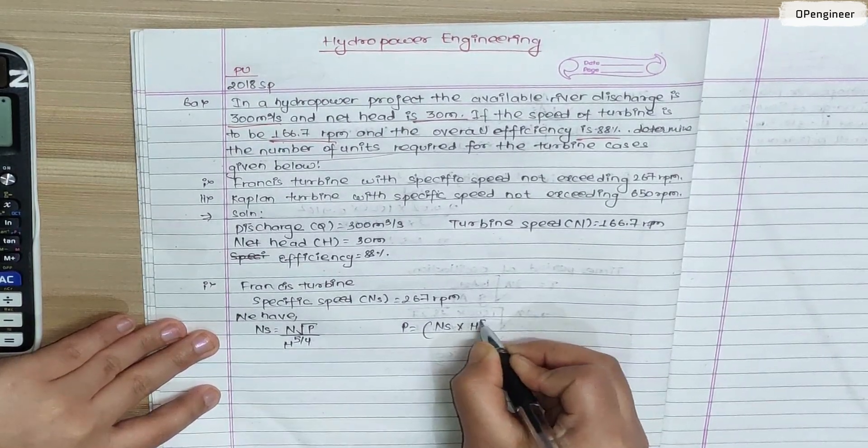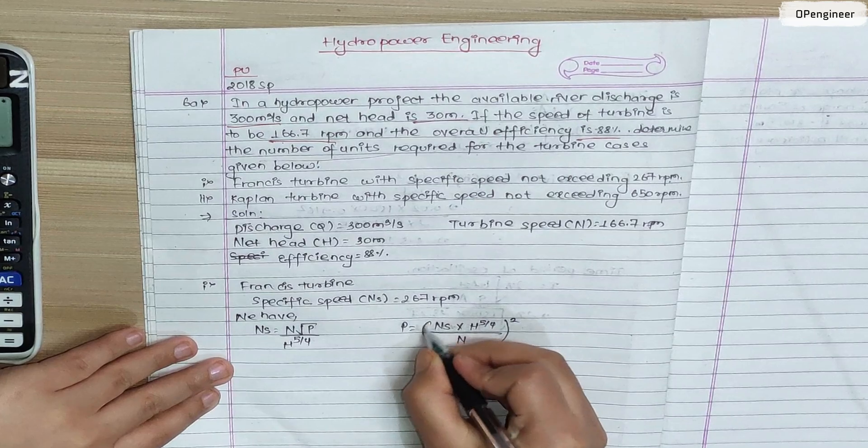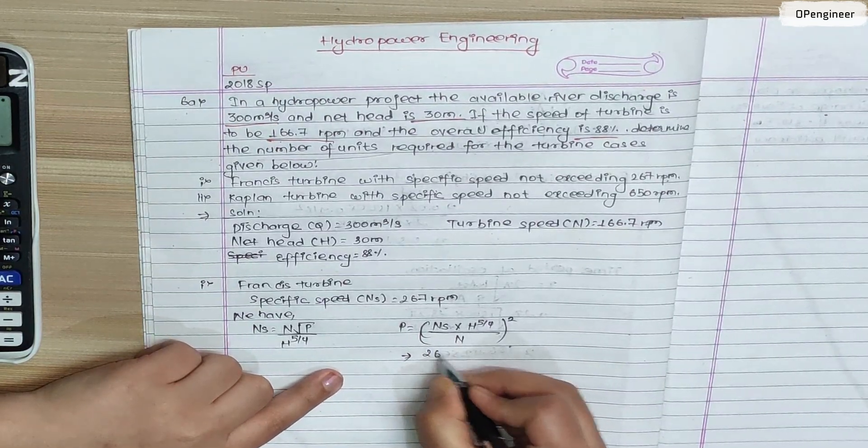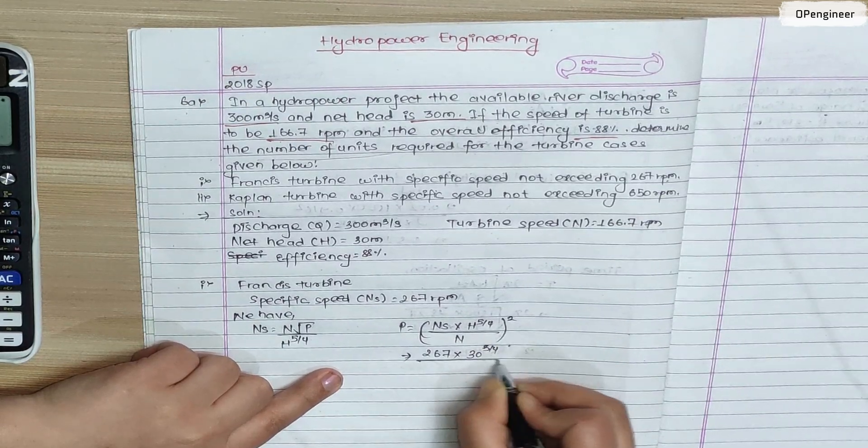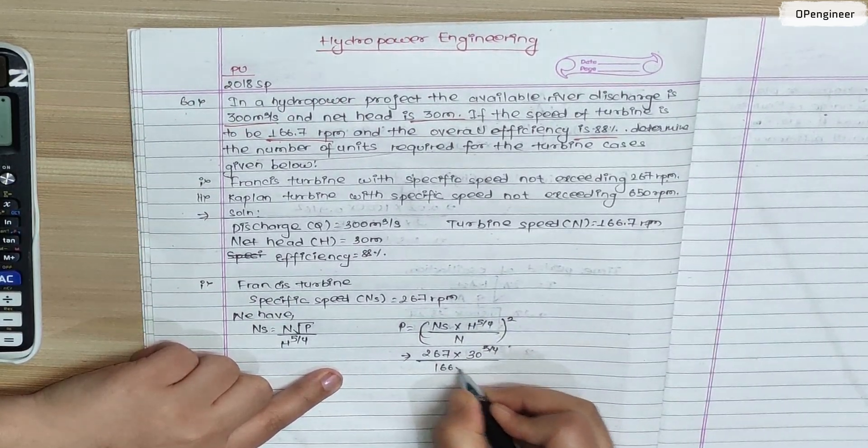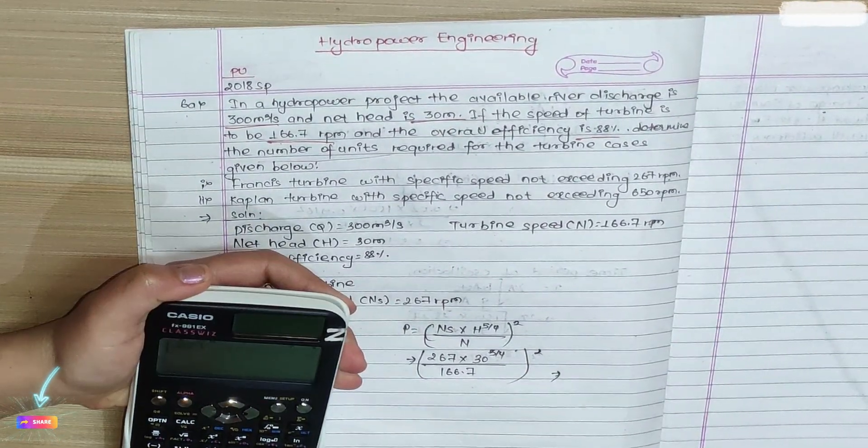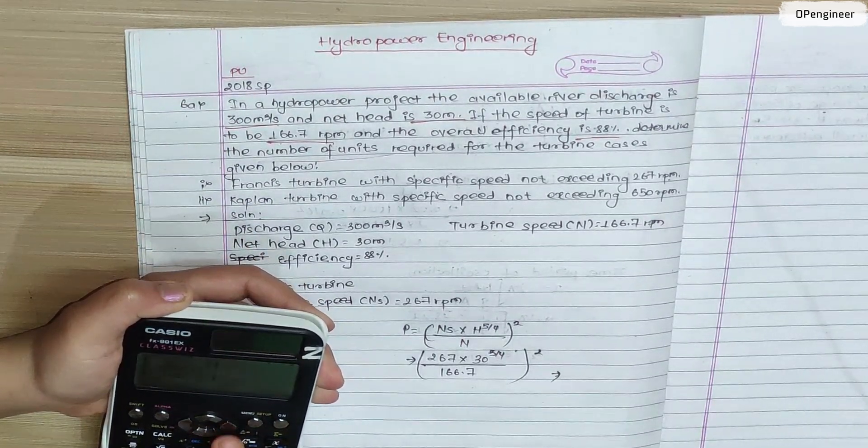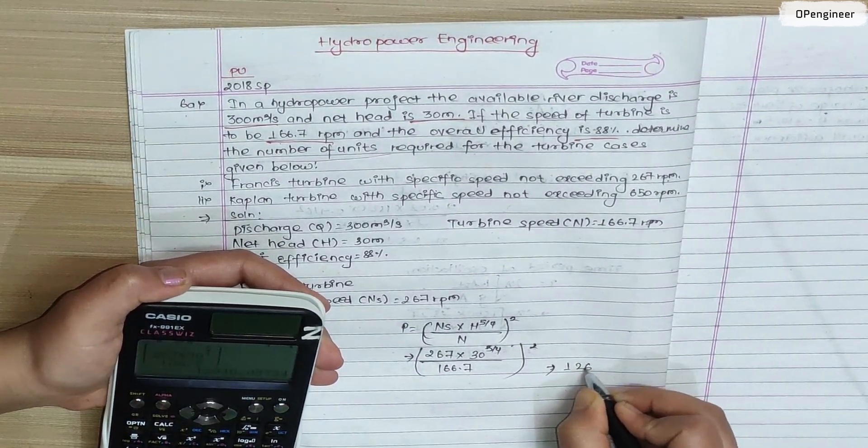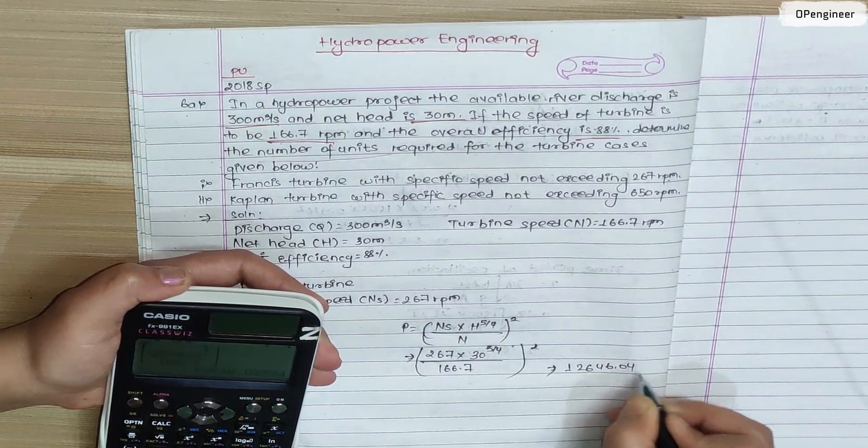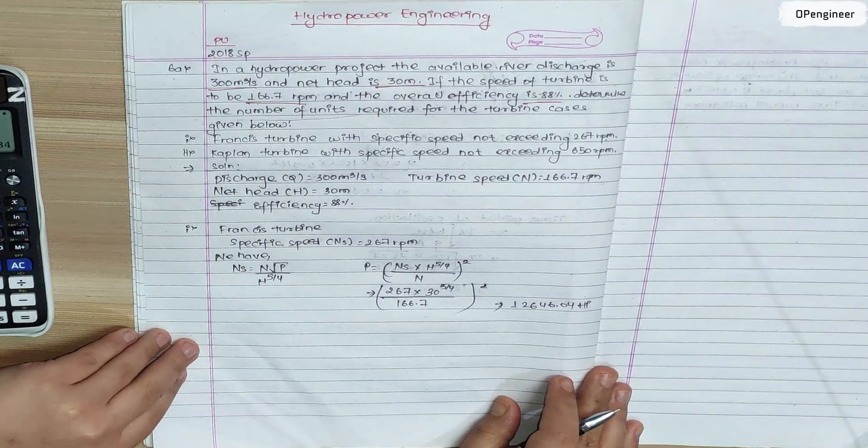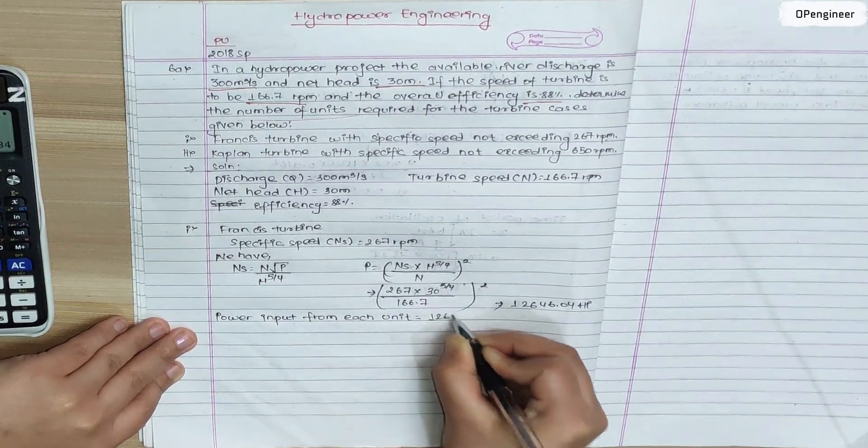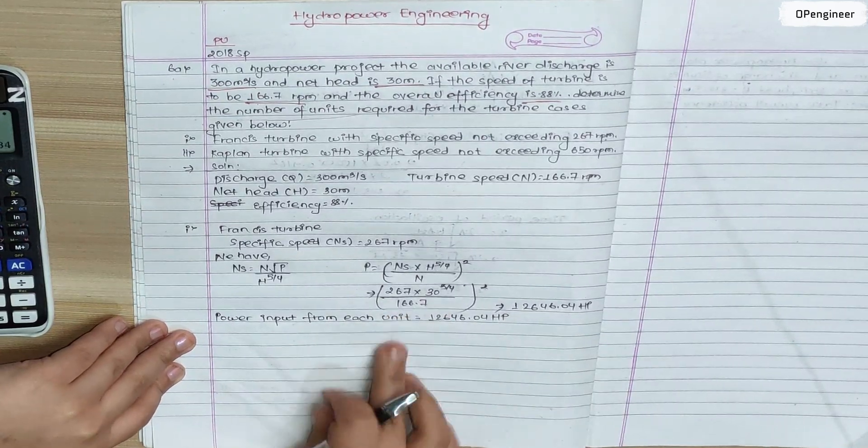The formula is Ns = N times square root of P divided by H to the power 5 by 4. So 267 = 166.7 times square root of P divided by 30 to the power 5 by 4. Calculating this: 267 into 30 power 5 by 4 divided by 166.7 whole square equals 12646.04 horsepower. This is the power input from each unit.